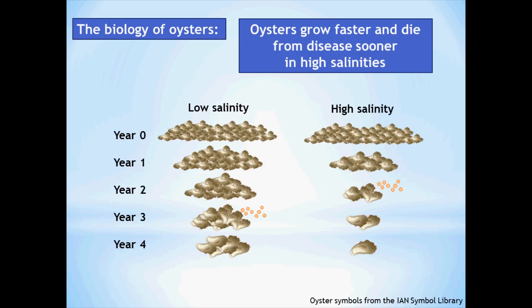We also know that oysters grow faster and die from disease sooner in high salinity waters. In low salinities, you may have a lot of oysters that grow very slowly, and the females might not be able to reproduce until year three, but you have a lot of oysters by year four. In high salinity waters, the oysters grow very quickly — the females may be able to produce eggs in year two, but you might not have many left by year four.